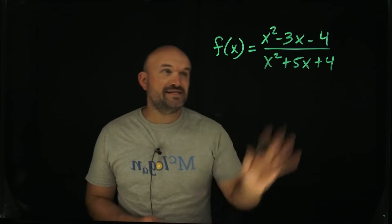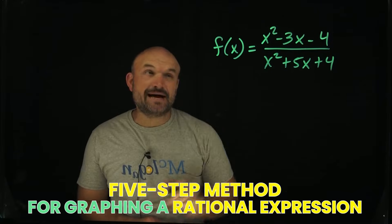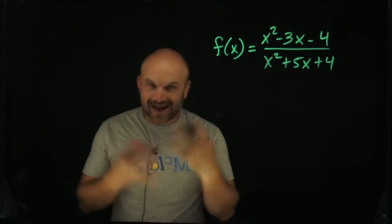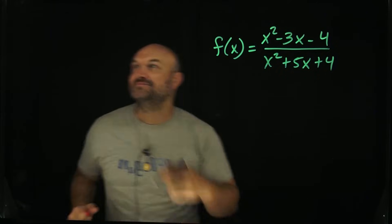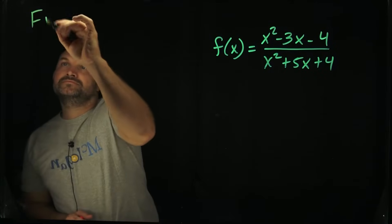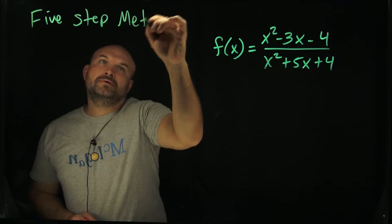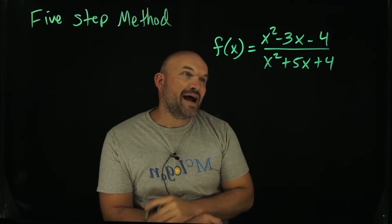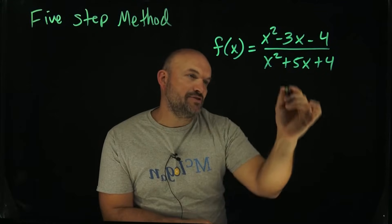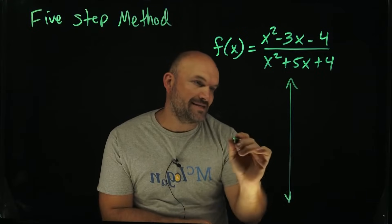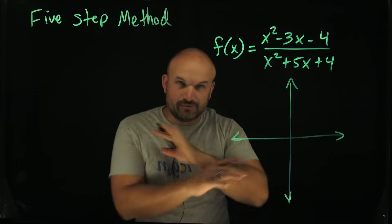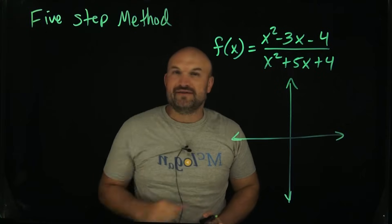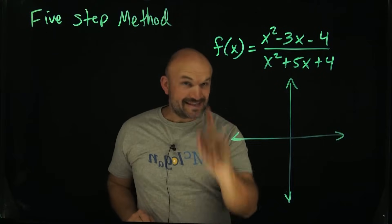What's up guys? In this video, what I want to do is give you five steps that you need to follow to be able to graph a function like this. I call it my five-step method. So what we want to do is we want to be able to graph this rational expression on an xy-axis. The first thing we always want to look at when we are trying to graph a rational function — step number one — is to go ahead and simplify.